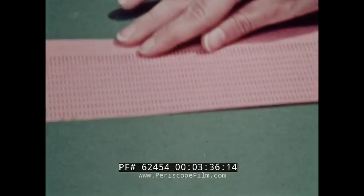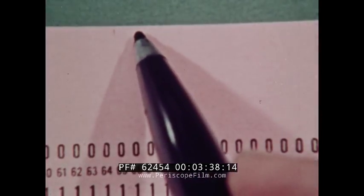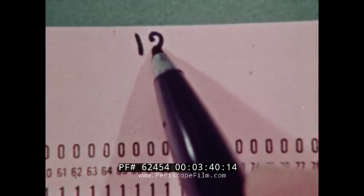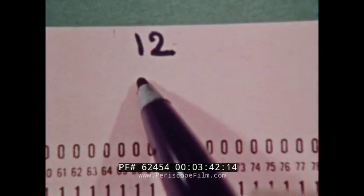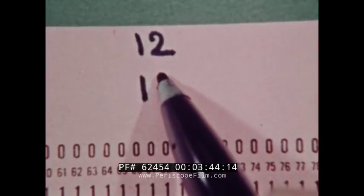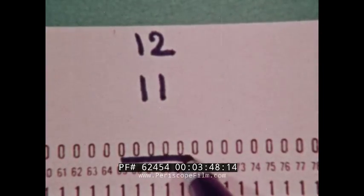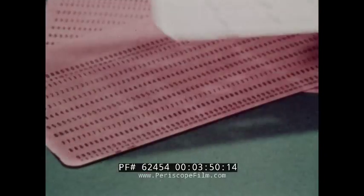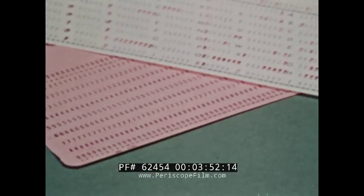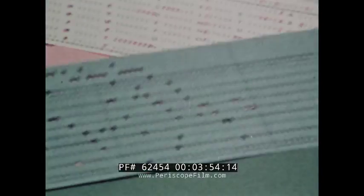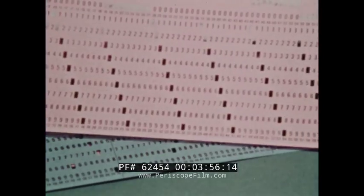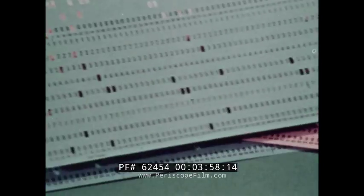The 12 and 11 rows are for zone punching only. The 0 row may be used for digits or as a zone. Digits are recorded by holes punched into the digit punching positions of the card from 0 to 9.